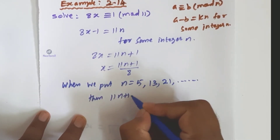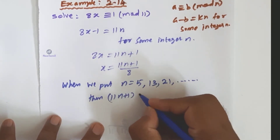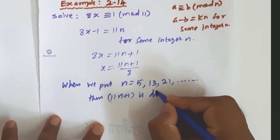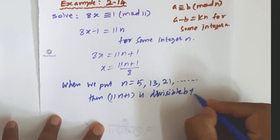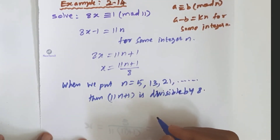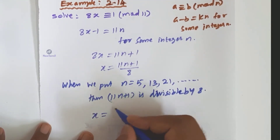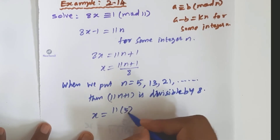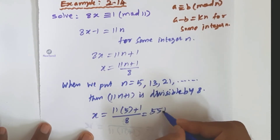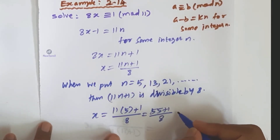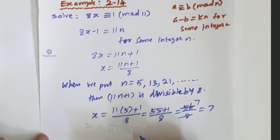So 11n plus 1 is divisible by 8. For the first value, n equals 5: x equals (11 times 5 plus 1) divided by 8 equals 55 plus 1 divided by 8 equals 56 divided by 8 equals 7. So x equals 7.